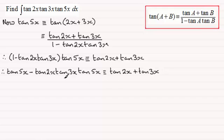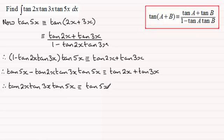And so if I rearrange this, make tan 2x, tan 3x, tan 5x the subject, then I'm going to get, therefore, tan of 2x, tan 3x, tan 5x is going to be identical to the tan of 5x minus tan 2x minus tan 3x.